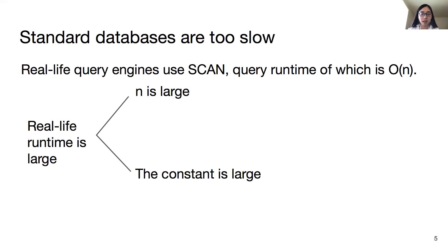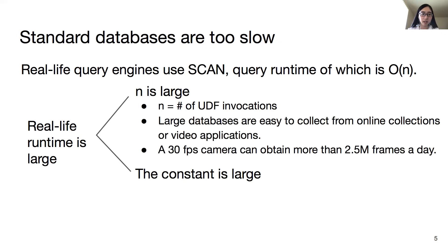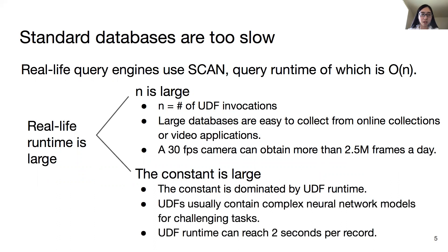When we analyze the runtime, we can find that real-life runtime is large because both n and the constant are large. Here n is the number of UDF invocations. It's large because large databases are easy to collect from online collections or video applications, and a 30-frames-per-second camera can obtain more than 2.5 million frames a day. The constant is dominated by UDF runtime, which is large because UDFs usually contain complex neural network models, and UDF runtime can reach 2 seconds per record.